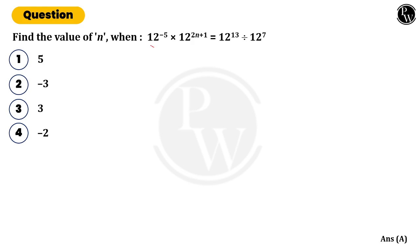So here this is the value we need to simplify to get the value of n. Let's have a look. 12 to the power of minus 5 into 12 to the power of 2n plus 1 is equal to 12 to the power of 13 divided by 12 to the power of 7. This is the condition given to us.